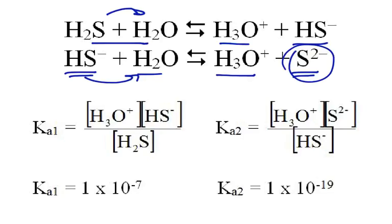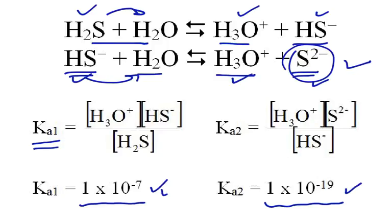So for the first equation, we would have our first Ka, and we can see it's going to be [H3O+][HS-] divided by [H2S]. And water is not part of the equation because it's a liquid. And for the second step, we have [H3O+][S2-] divided by [HS-]. And for these values here, the Ka for the first one is 1×10^-7, so it's a pretty weak acid. And for the second proton coming off, that's 1×10^-19. It's much, much weaker. And it's always true that Ka2 is going to be smaller than Ka1.